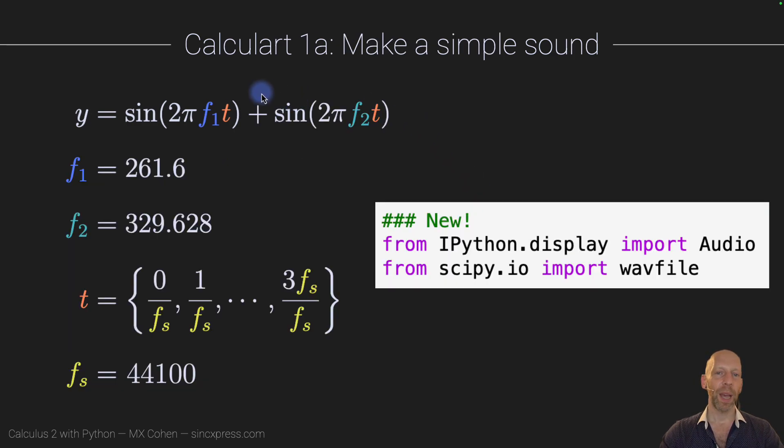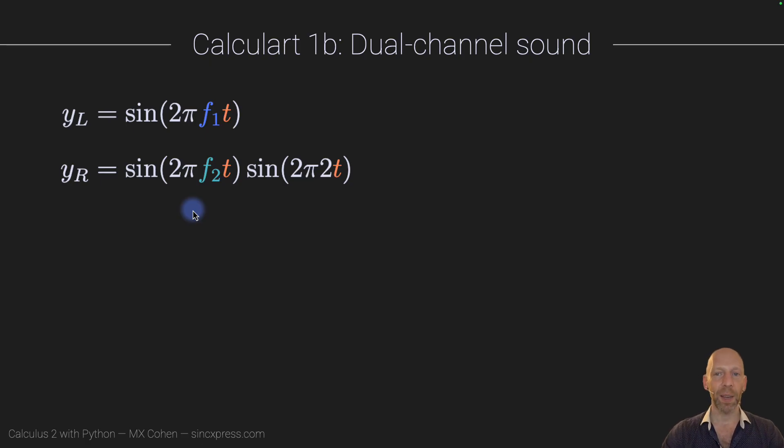So then once we have the basics down, what we want to do is create dual channel sound. So that means that there's this sound wave going into the left ear and this sound wave going into the right ear. So we're going to hear different functions in the left ear and the right ear. So I will also show you how to do that.